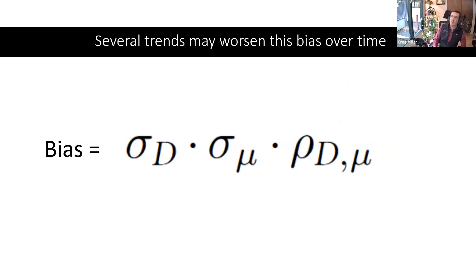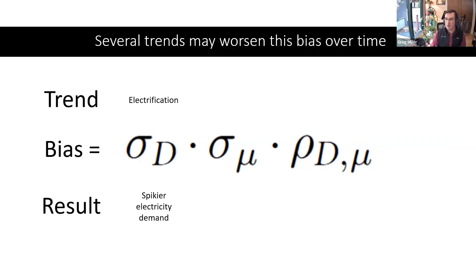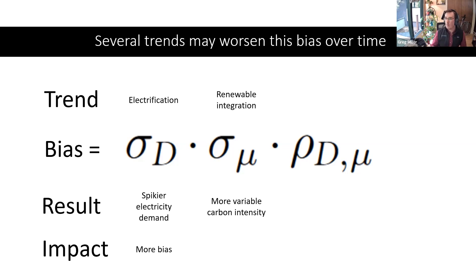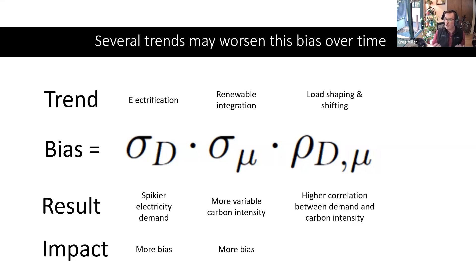Several trends may worsen this bias over time. Recall: bias is driven by variability in demand, variability in carbon emissions, and their correlation. First, electrification will result in spikier, more variable electricity demand — charging an electric car at night creates a large demand spike, increasing bias. Second, renewable integration leads to more variable carbon intensity at different times of day. Third, load shaping and load shifting — intentionally shifting load to times when carbon intensity is lower — increases correlation between demand and carbon intensity, which increases the bias of annual accounting.